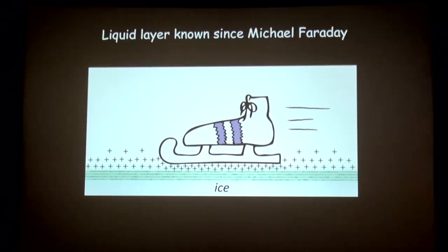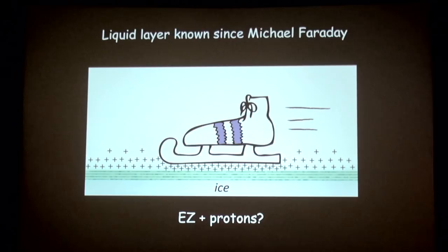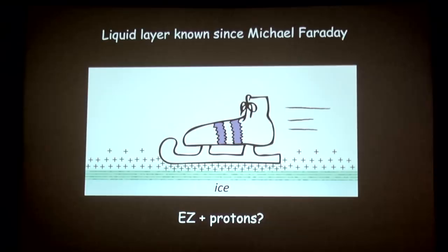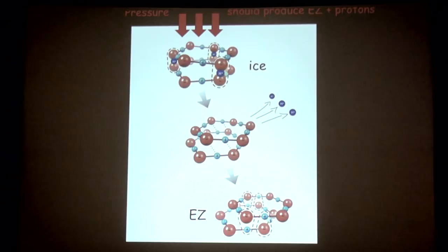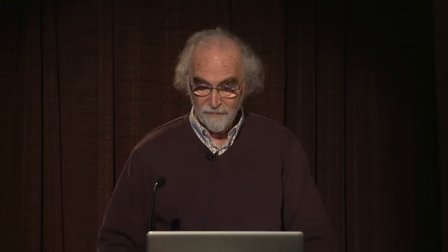What about ice skates? It's been known since Michael Faraday that on top of ice there's a liquid layer that reduces friction. But I think it's more than that. This liquid layer likely contains EZ plus protons — since I've shown that when ice melts it gives you EZ water, and with EZ come protons. So you have a lot of protons sitting beneath the skate blade, repelling each other and repelling the skate from the ice. The more pressure you put on, the more protons you squeeze out, and the lower the friction.